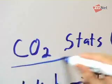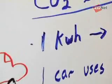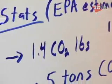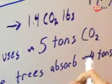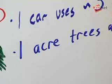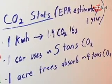In addition, we're using CO2 stats from the EPA over a year period, which tells us that when you generate 1 kilowatt hour of electricity, it turns into about 1.4 pounds of CO2. For comparison, a car on average will create about 5 tons of CO2 from its exhaust, and you'd have to plant roughly an acre of trees to absorb somewhere around 4 tons of CO2. Bear these numbers in mind as we go through these statistics.